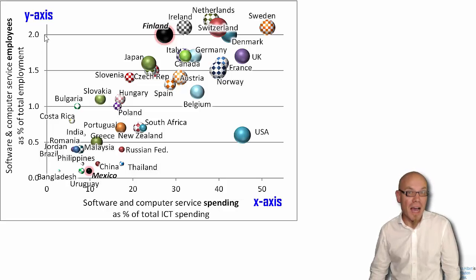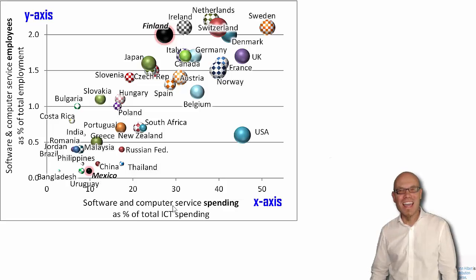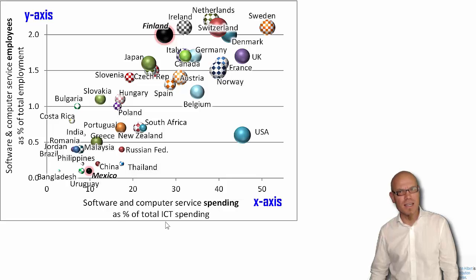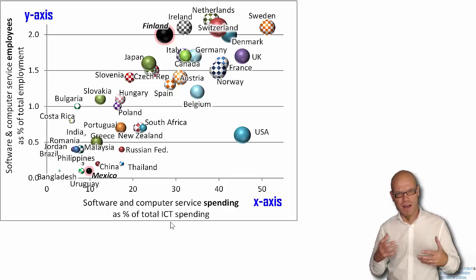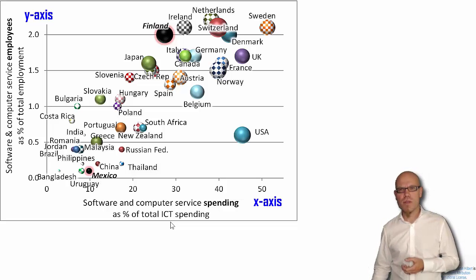So these are basically IT workers. And on the x-axis, we have the amount of software and computer service spending as a percentage of the total ICT spending, or the total spending on digital technology.